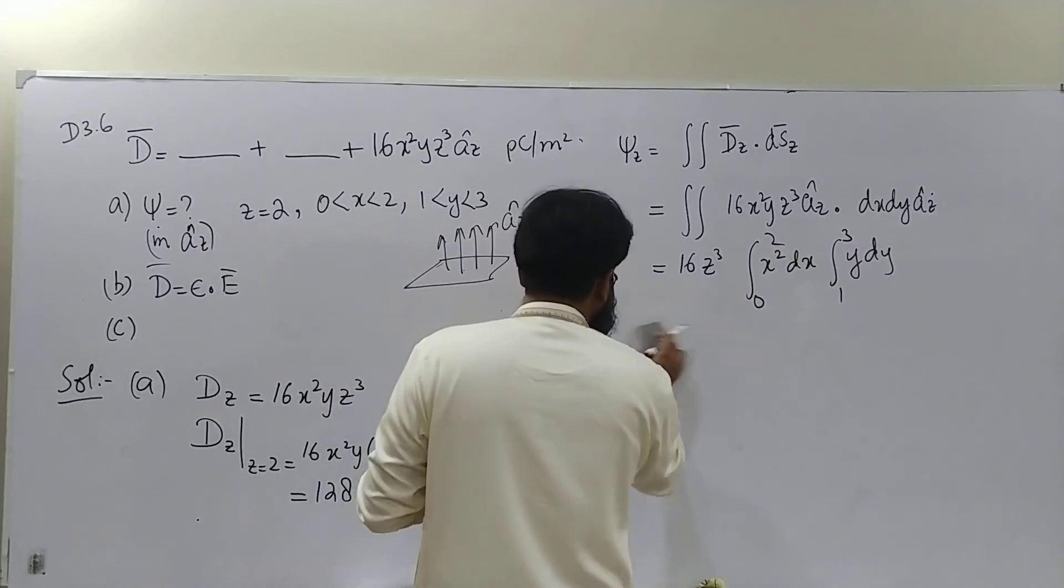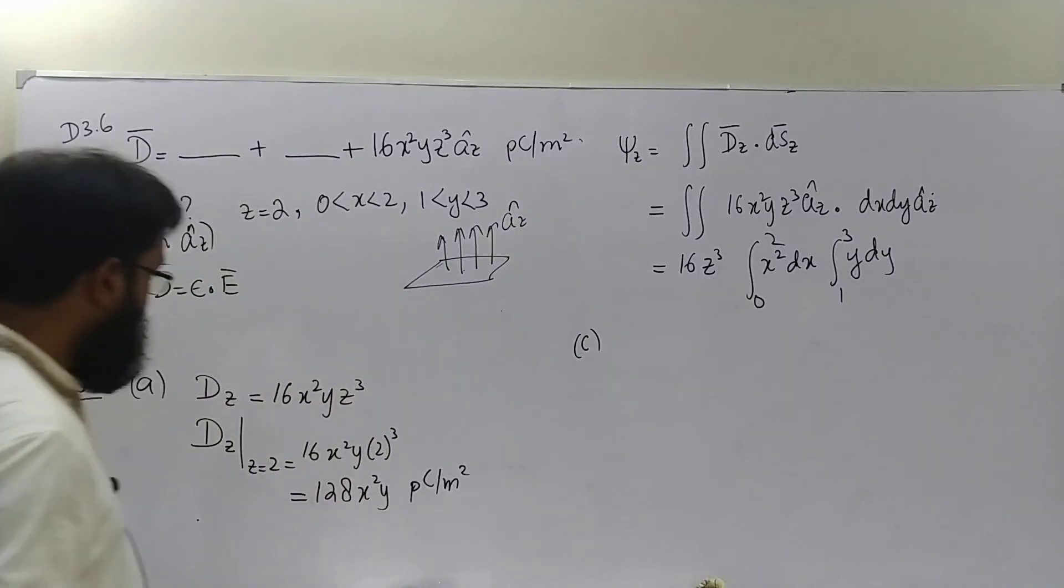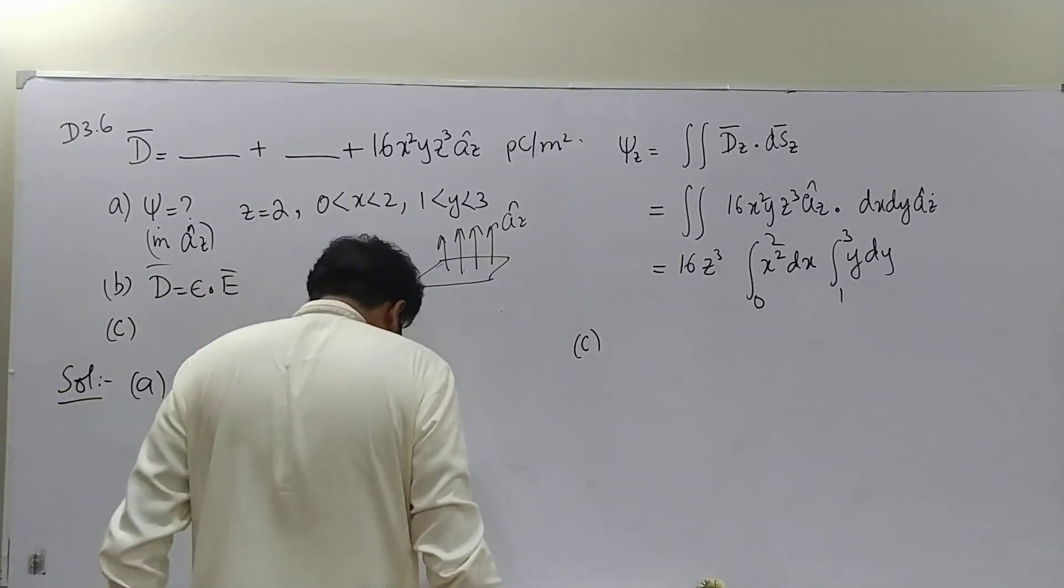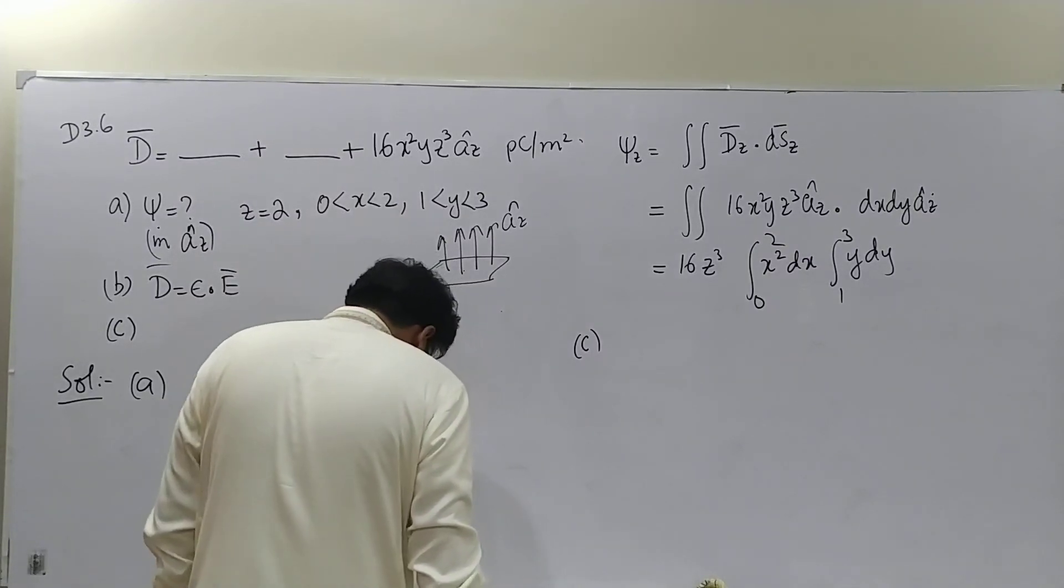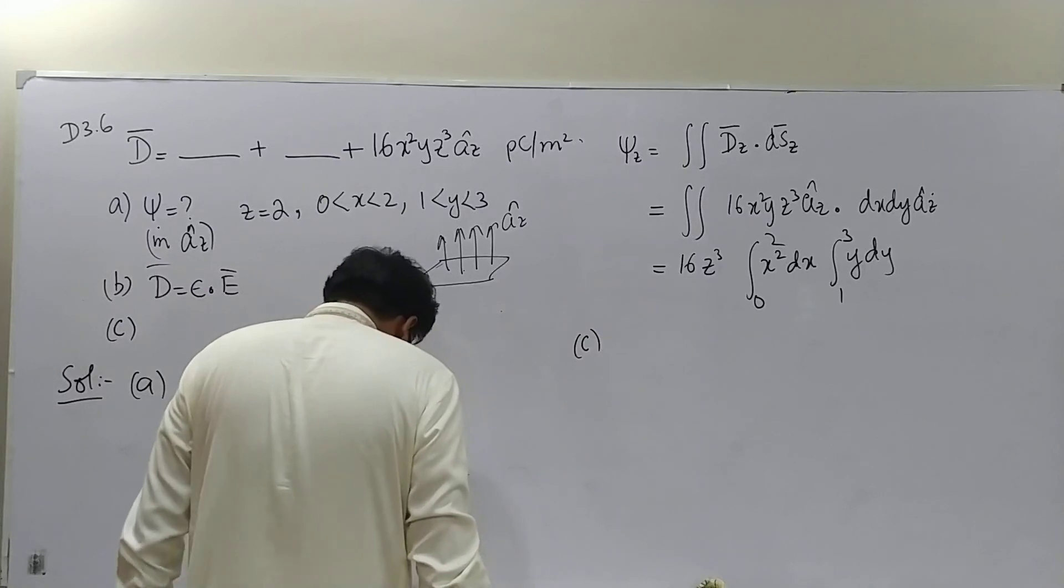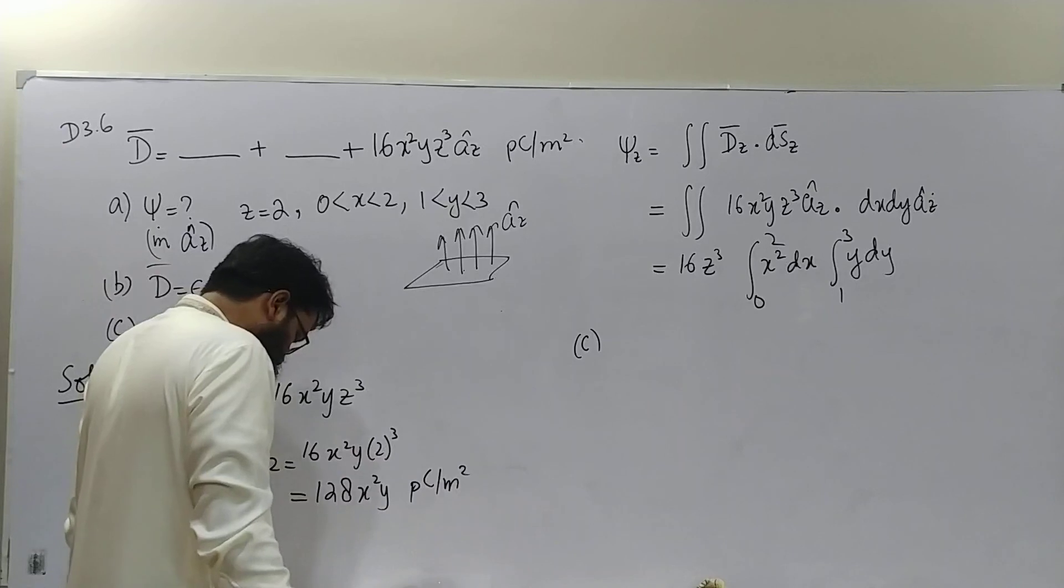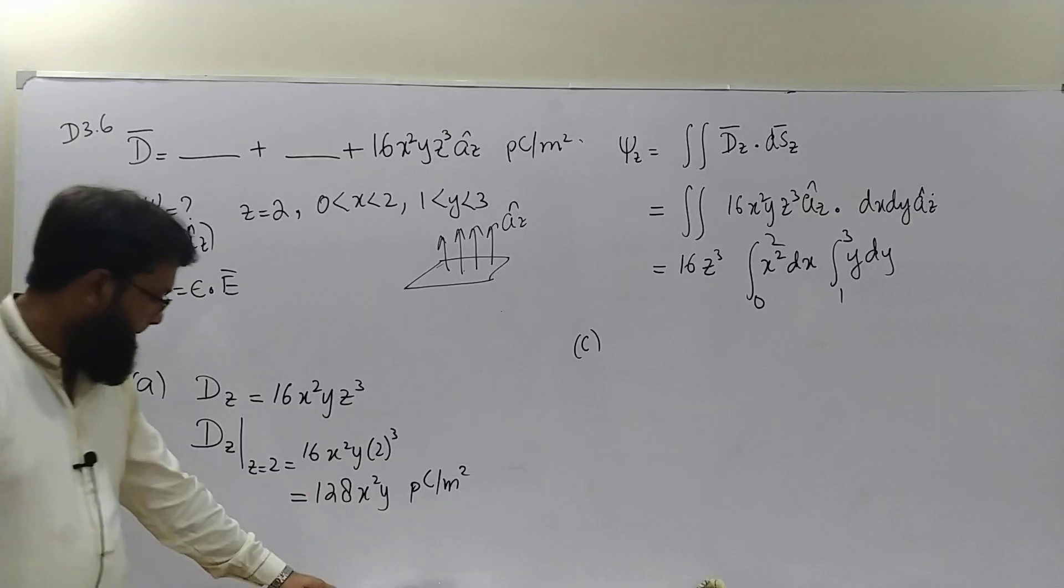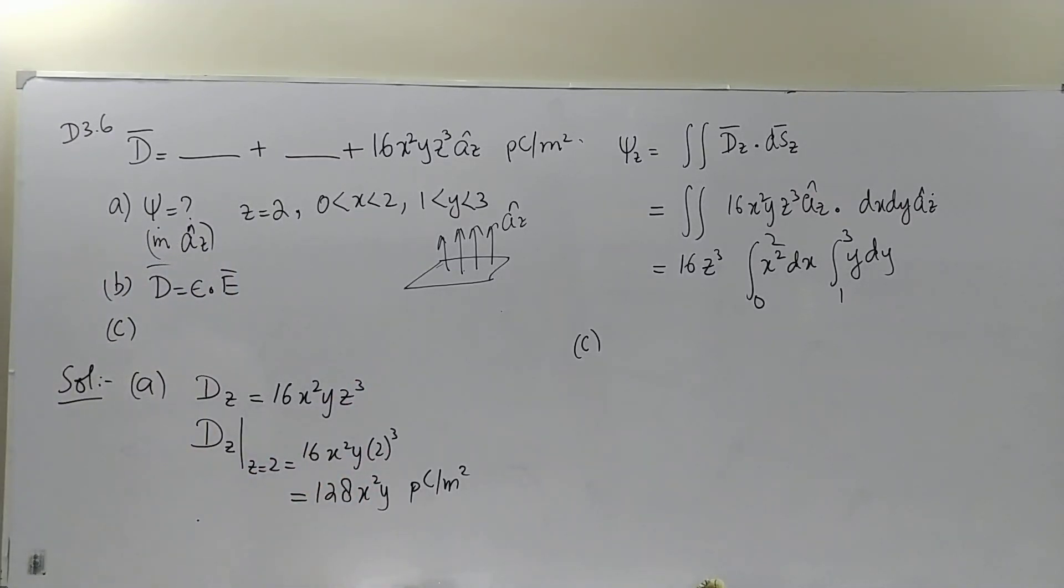Part B I am not going to do, very straightforward. Part C, let me see what Part C asks us to do: find approximate value of the charge contained in an incremental sphere located at this point and having a volume of so and so. Use equation alpha for this part. This is a big hint for you.